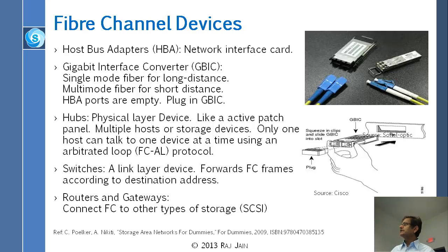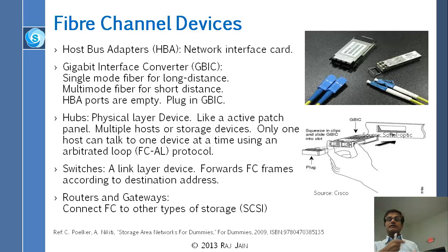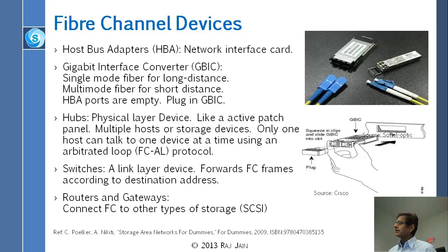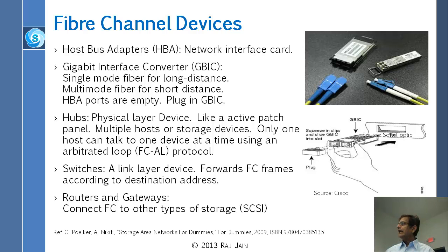Hubs and switches: a hub is a physical layer device, just like an Ethernet hub — it's like an active patch panel. Multiple hosts or storage devices can be connected to a hub, but only one host can talk to one device at a time — inside the hub there is a ring. That is FC-AL, Fiber Channel Arbitrated Loop. Switches are a link layer device and they forward Fiber Channel frames according to destination address, just like an Ethernet switch. Routers and gateways do higher-layer stuff to connect to other networks like SCSI.